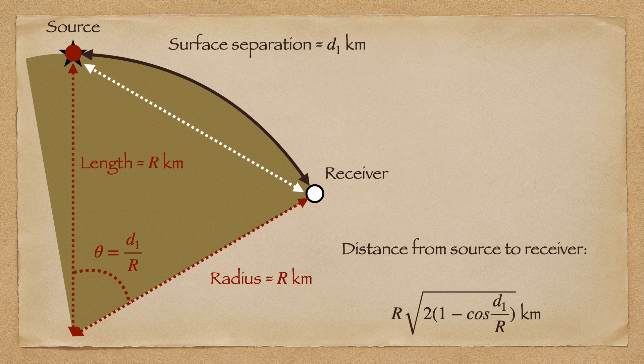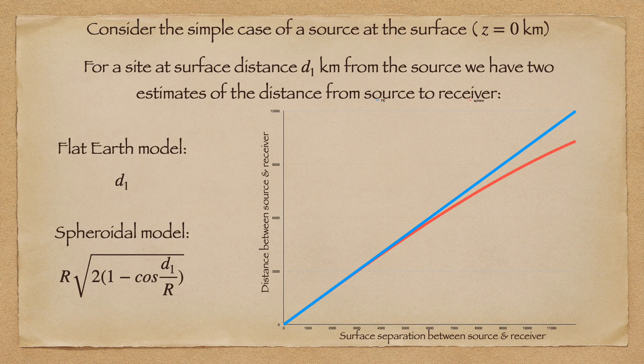Again, the mathematical formula for this distance becomes simpler if the source is at the surface of the spheroid. Just like in the last video, we now have two models for reality: one in which the Earth is flat, and the other in which the Earth is spheroidal. We can compare the straight-line distances between source and receiver in both cases. Here, I have plotted straight-line distance between source and receiver as a function of surface separation for the two models. The spheroidal model is in red, and the flat-Earth model is in blue. For a source-receiver separation of 10,000 kilometers, the spheroidal straight-line distance is 10% shorter than the flat-Earth straight-line distance. So seismic energy traveling from the source to the receiver has a shorter path to cover in the spheroidal case than in the flat-Earth case.